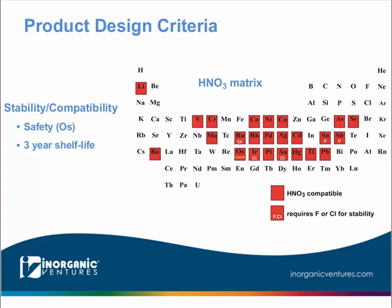Regarding the criteria used for designing these products, we're looking at two key things: stability and compatibility. Of these two considerations, safety is going to be of primary concern — and osmium is worth highlighting in this regard. Our goal is a minimum shelf life of three years for any product, and at least four years for stock products. All six new products we are offering in 2018 will have a four-year shelf life. The periodic table diagram lists all 24 elements that are part of the methods and the stability and compatibility concerns worth noting.